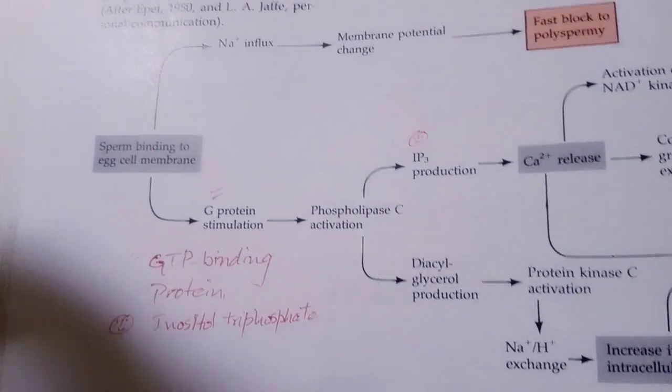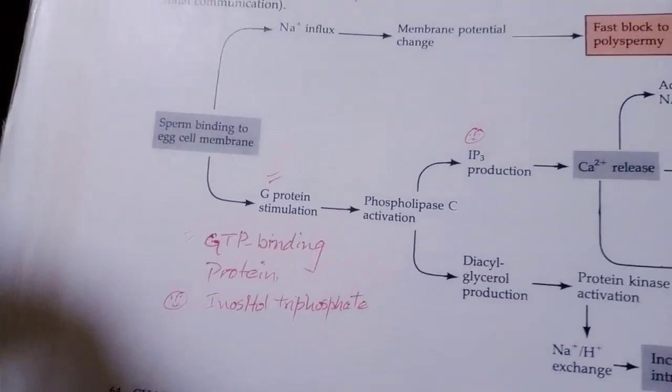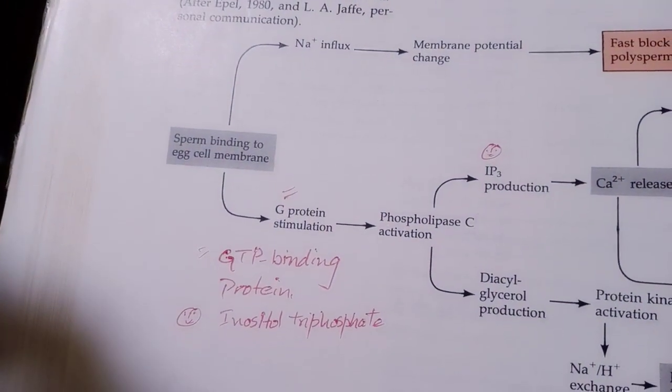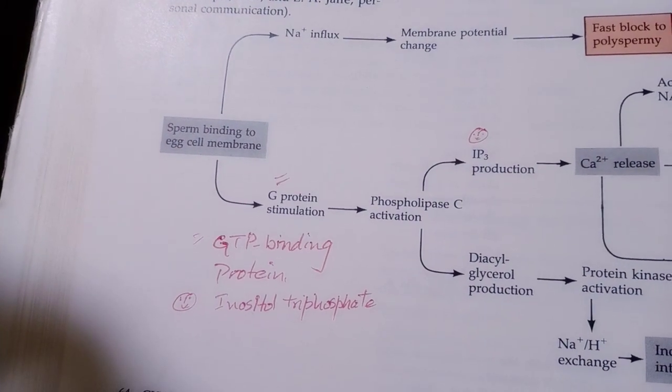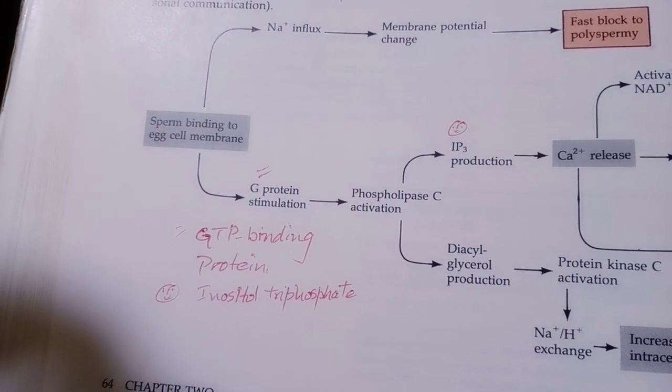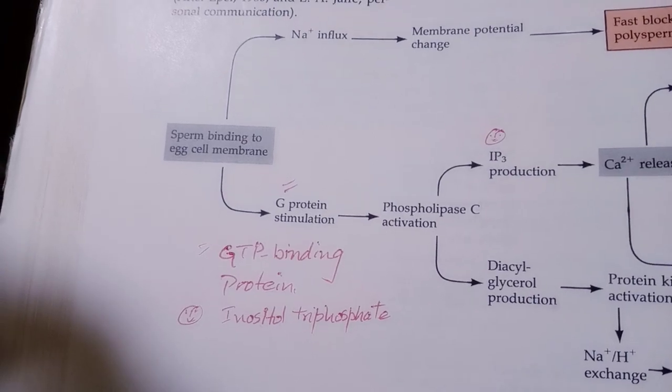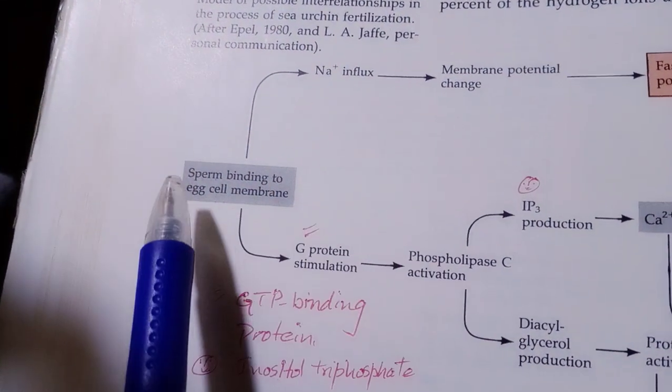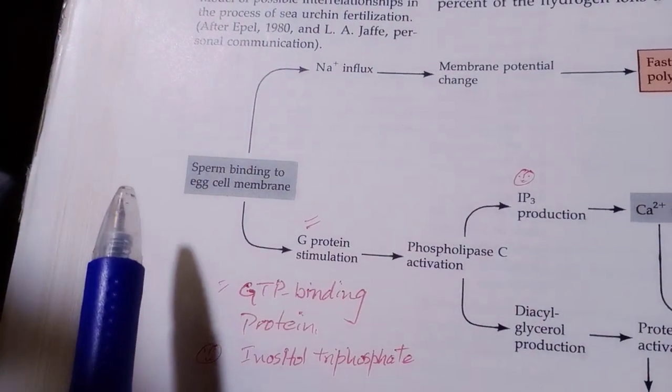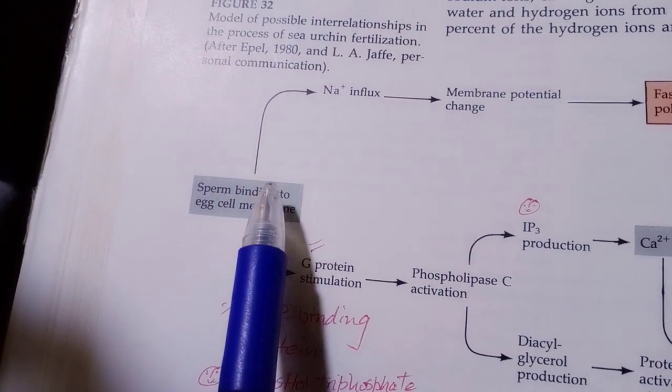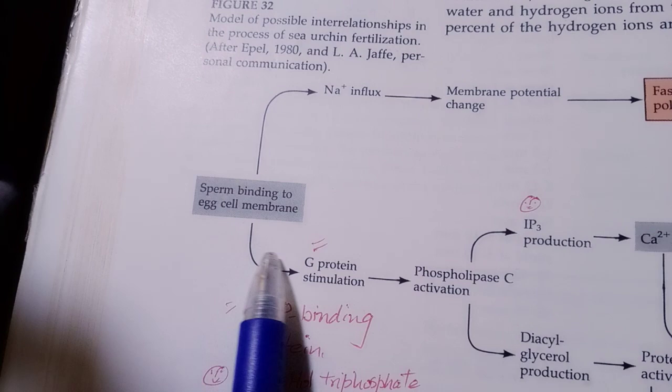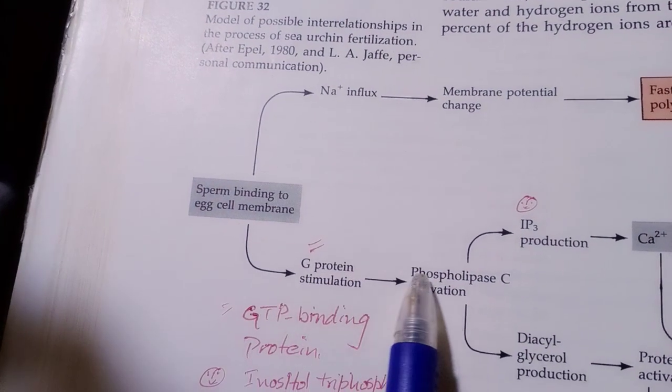Here is how the fast and slow block of polyspermy occurs. As the sperm binds to the egg cell membrane, two reactions start. One is the pathway towards the slow block to polyspermy.